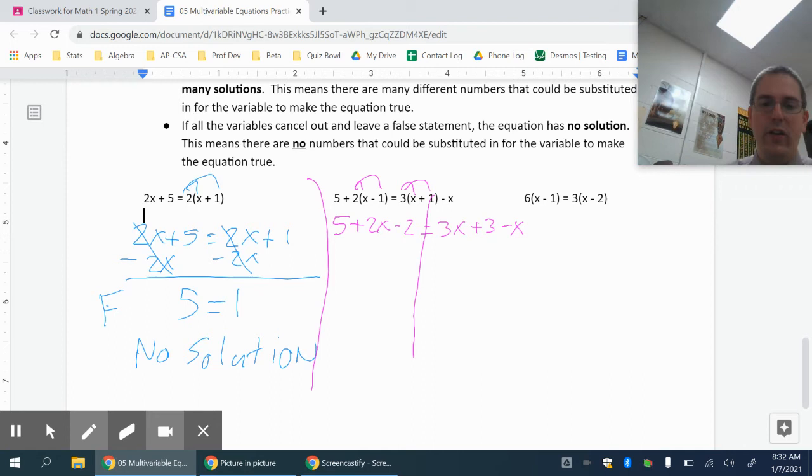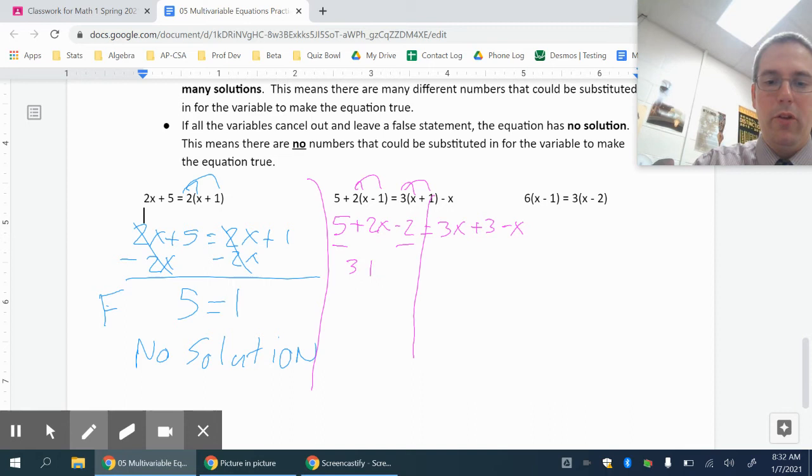Might be helpful to draw the line to keep our two sides separate. I still can simplify each one by combining some like terms. So 5 minus 2 is 3, so I have 3 plus 2x.